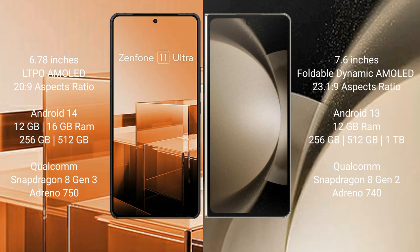Asus Zenfone 11 Ultra comes with 12GB and 16GB RAM, 256GB and 512GB internal storage, Qualcomm Snapdragon 8 Gen 3 processor, and an AnTuTu benchmark score of around 1,500,000. Samsung Galaxy Z Fold 5 comes with 12GB RAM, 256GB and 512GB and 1TB internal storage, Qualcomm Snapdragon 8 Gen 2 processor, and an AnTuTu benchmark score of around 1,400,000.